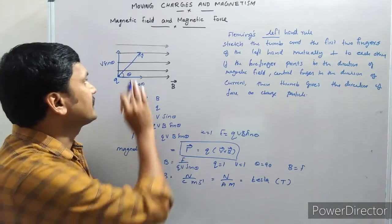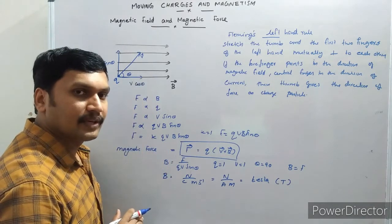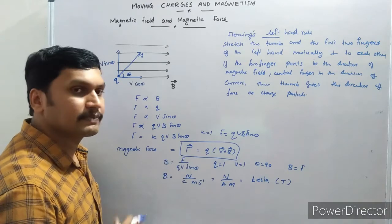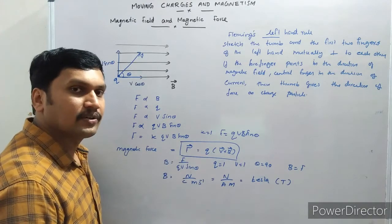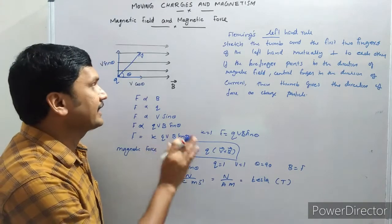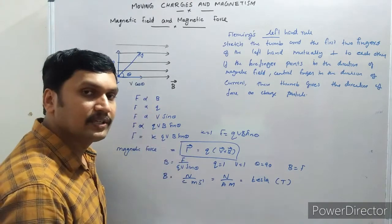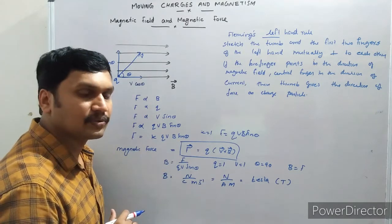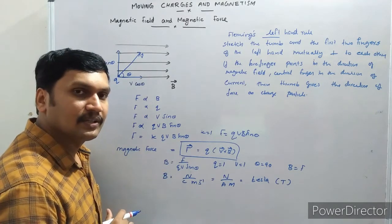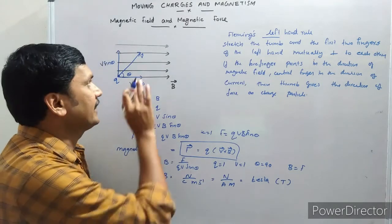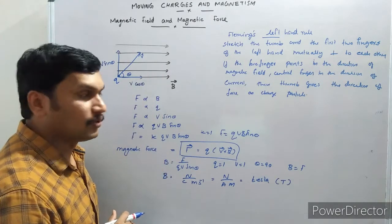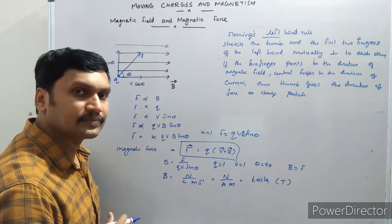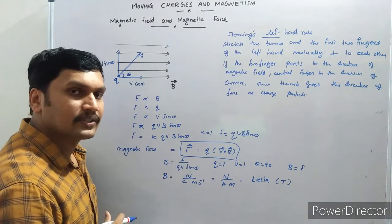Now let us see what is the direction of this force. As it is a vector quantity, we have to specify the direction. To find the direction of this magnetic force, we use Fleming's left hand rule.